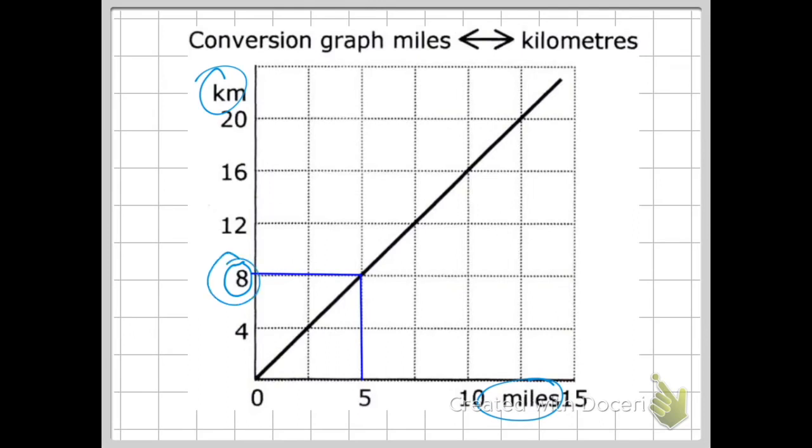So let's say if I wanted to find out what 16 kilometers were. 16 kilometers, I take a ruler and then where the line intercepts I draw a straight line down and I can see that 16 kilometers is the same as 10 miles.